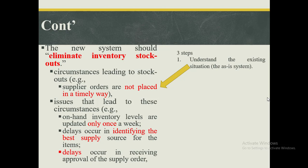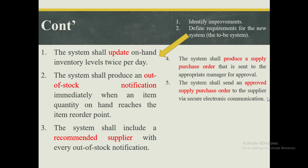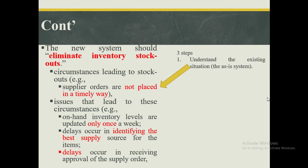You realize that the inventory levels are only updated once a week. You also realize that there are delays when trying to identify who is the best supplier to bring the items. Additionally, there are delays that take place before approval happens to make a requisition for stock. You can now see that we have an idea of the existing situation. The next thing to look at is the improvements — what needs to happen so that we are able to eliminate inventory stock-out.